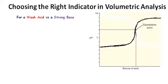For a weak acid versus a strong base, the acid should be placed in the conical flask and the base in the burette.